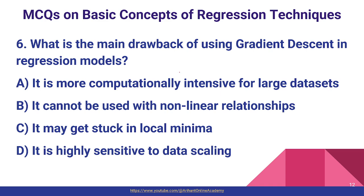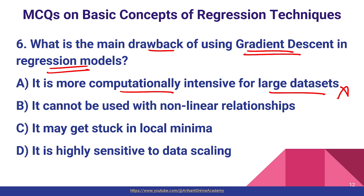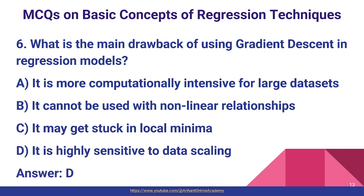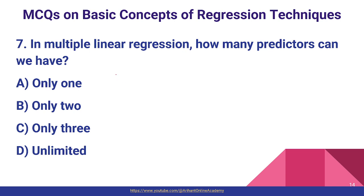Question number six: what is the main drawback of using the gradient descent algorithm in regression models? Options include: it is more computationally intensive for large datasets, it can be used with non-linear relationships, it may get stuck in local minima, or it is highly sensitive to data scaling. The main drawback is its sensitivity towards data scaling, so option D is the correct answer.